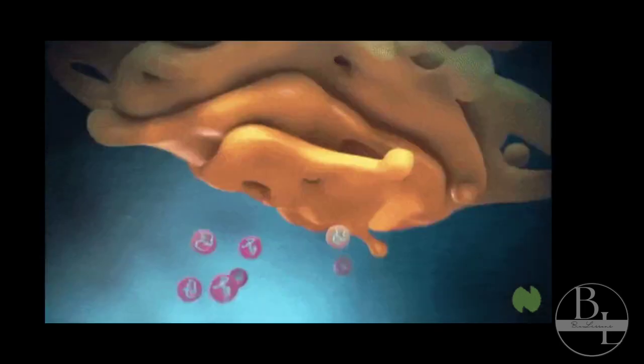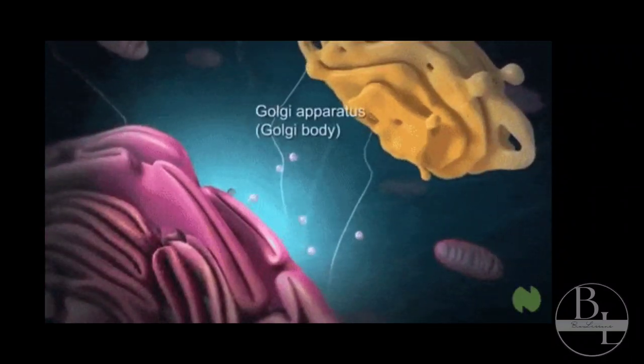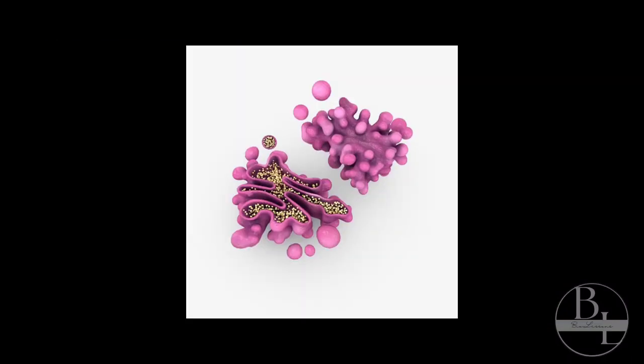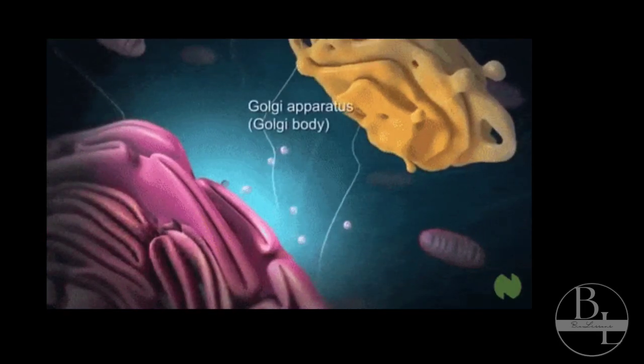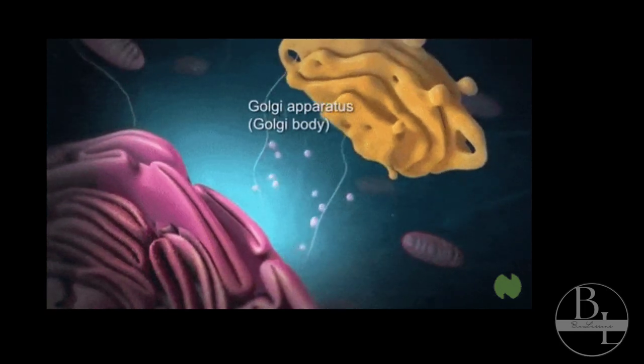Golgi carries out two types of functions: modification of secretions of endoplasmic reticulum and production of its own secretions. The transport vesicles leaving from the Golgi may get markers impregnated on their membrane so that they can identify their specific target cell or cell organelle.